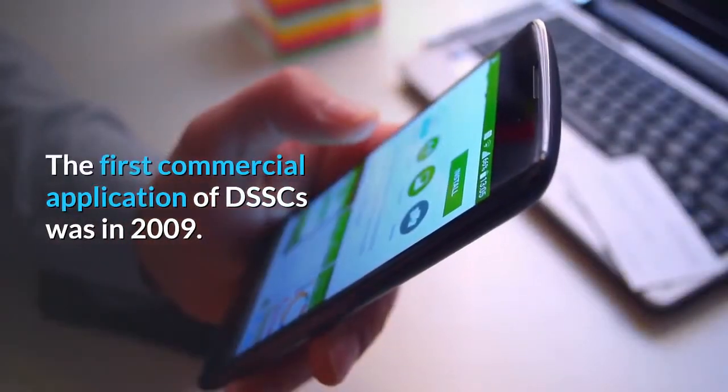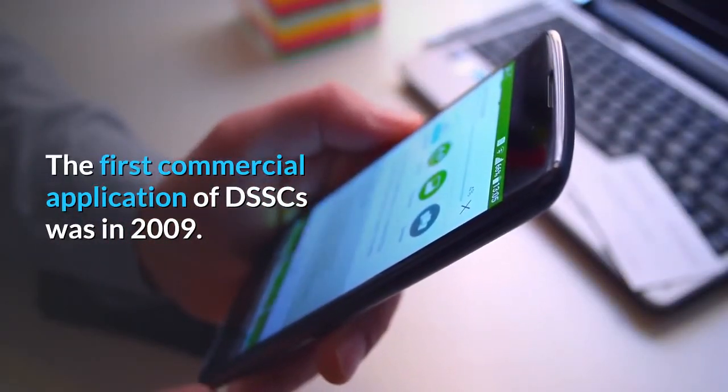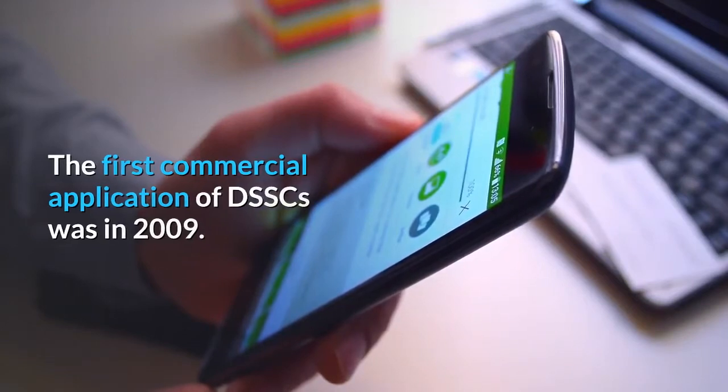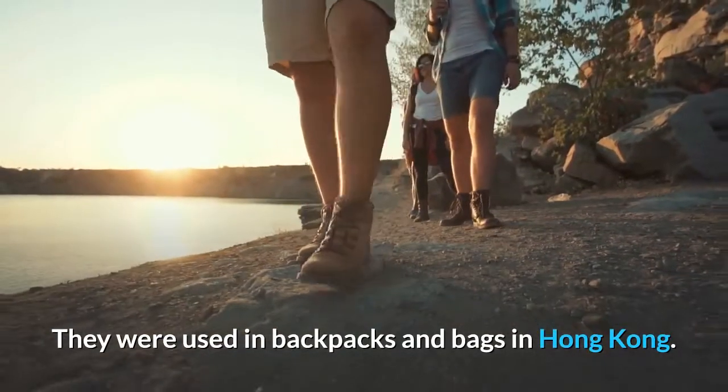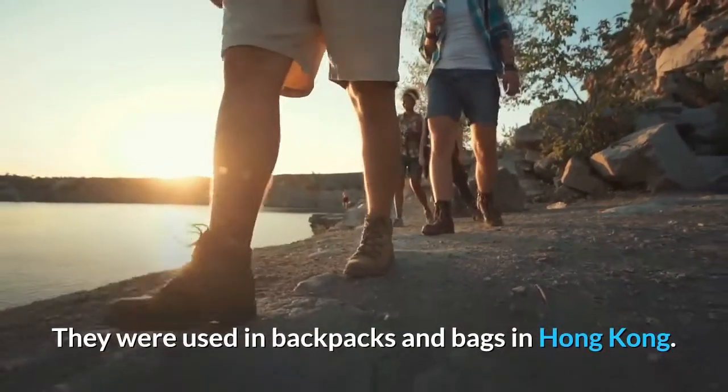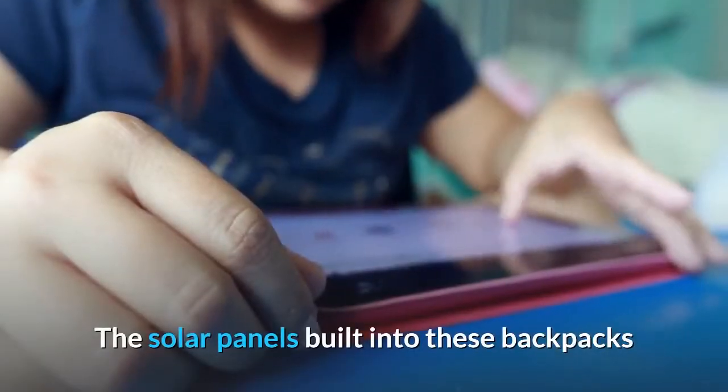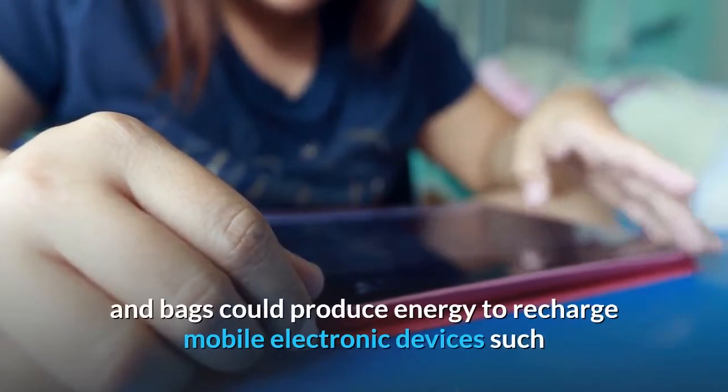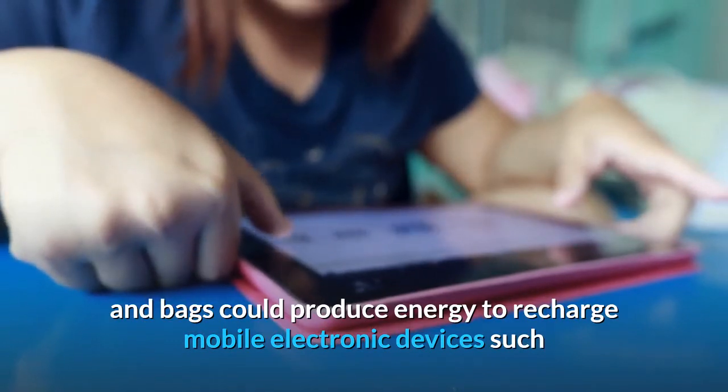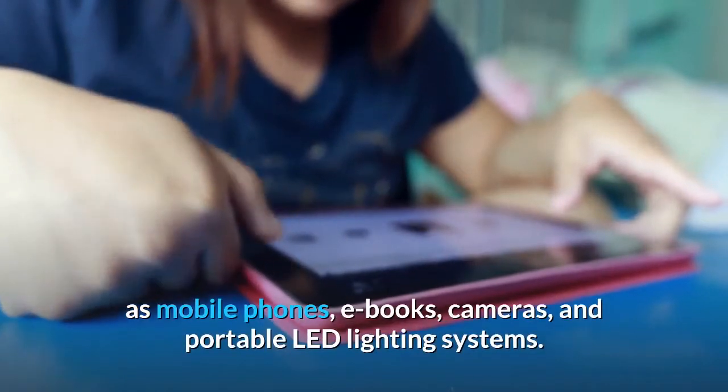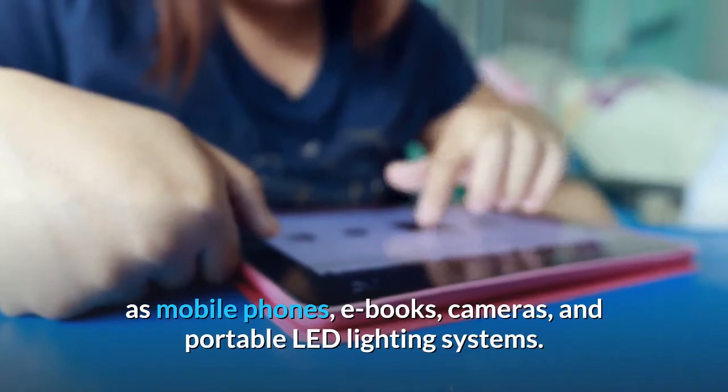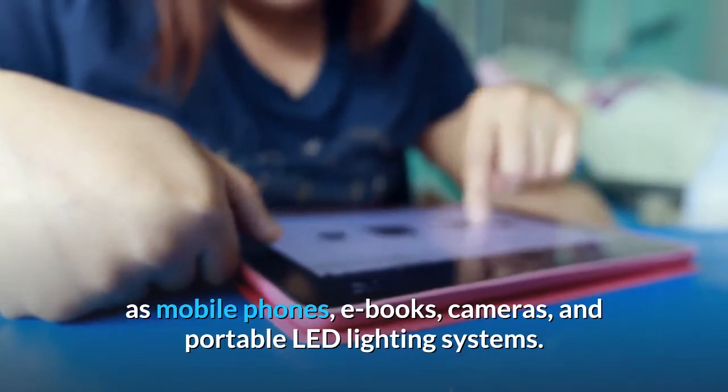The first commercial application of DSSCs was in 2009. They were used in backpacks and bags in Hong Kong. The solar panels built into these backpacks and bags could produce energy to recharge mobile electronic devices such as mobile phones, e-books, cameras, and portable LED lighting systems.